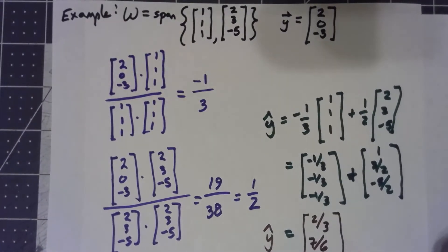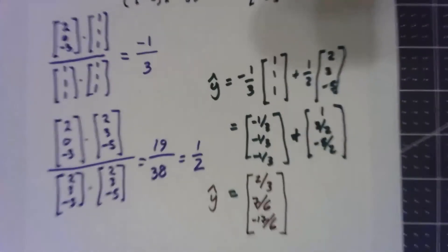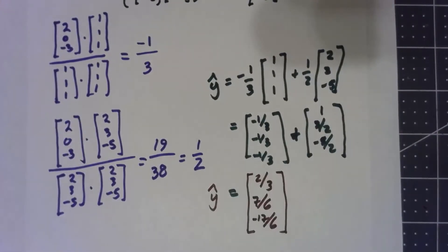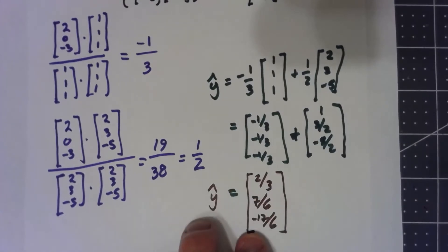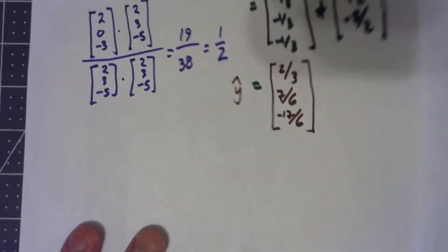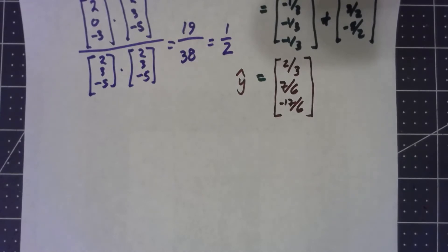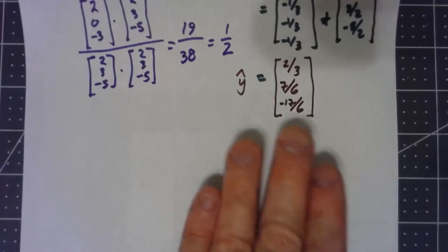So that vector there is in my subspace w, and that's important. In fact, this is probably the important part. There are certain applications where knowing what that thing is is really important. But just as important and in my mind more interesting is what's the remainder stuff? What's left over after this vector?